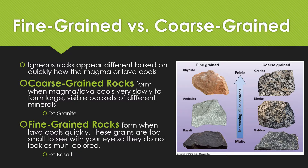We talk about igneous rocks as being fine-grained or coarse-grained, which has to do with how quickly the magma or lava cools. Coarse-grained rocks form when the lava cools very slowly — you can see all the different grains of different colored materials and pockets of different substances. Granite is an example of this. Fine-grained rocks are where you can't see the grainy dots; the grains are so small that the rock doesn't appear multicolored or spotted. These form when lava cools quickly.